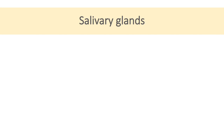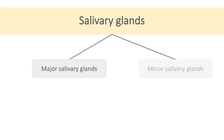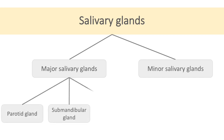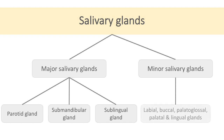Salivary glands are broadly classified into major salivary glands and minor salivary glands. Major glands are the parotid, submandibular, and sublingual glands. They are enclosed in a capsule and their ducts run a small distance before they open into the oral cavity. Minor glands are the labial, buccal, palatal, palatoglossal, and lingual glands. These are not surrounded by a capsule and their ducts open directly into the oral cavity.